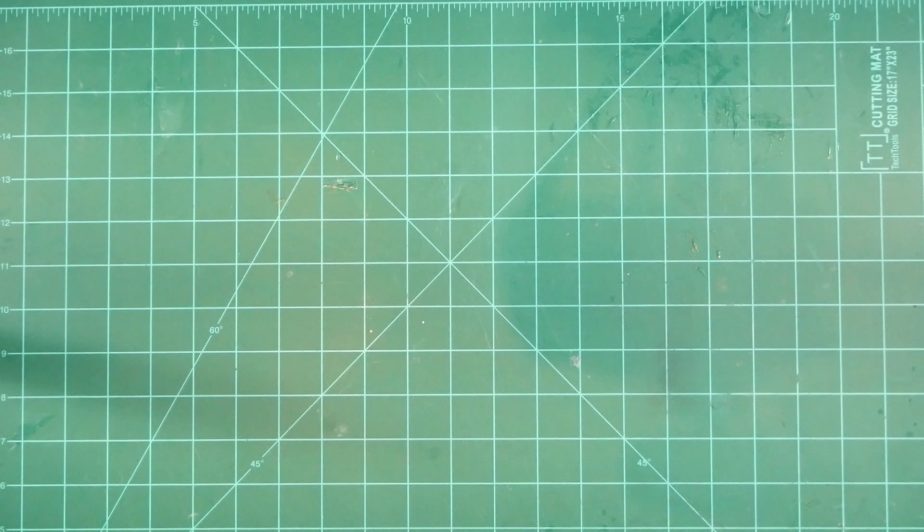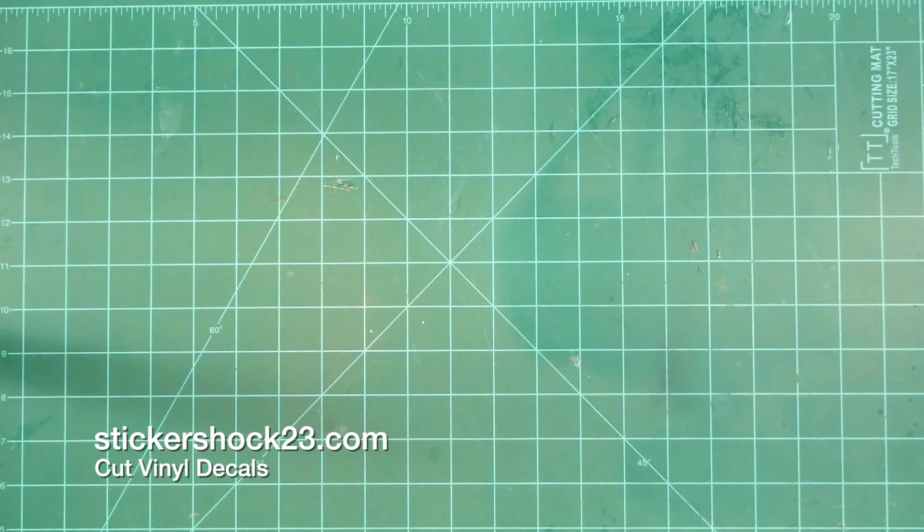One thing we can keep in mind is that this same approach, everything we're going to discuss today, will work on larger mid and high power models just as well. The markings might need to be replicated with paint instead of tiny kit decals, but we can do that by reaching out to a cut vinyl vendor like Mark Hayes at Sticker Shock, or you can try doing it on your own with a Cricut personal vinyl cutter.